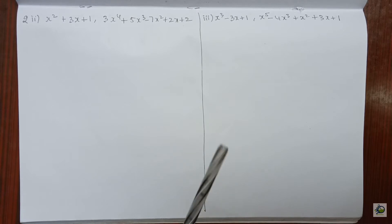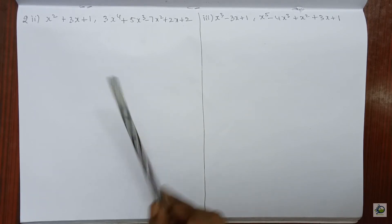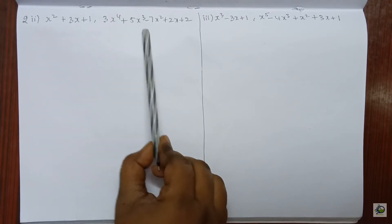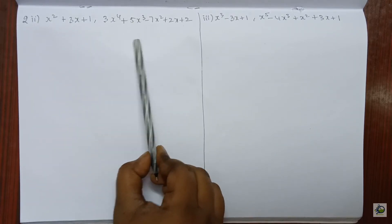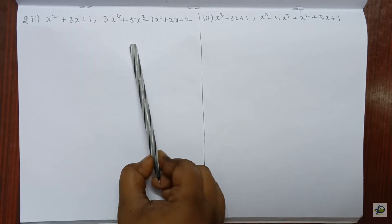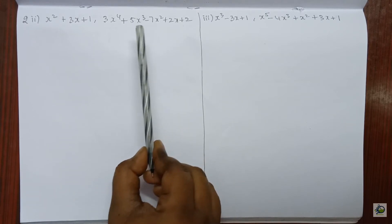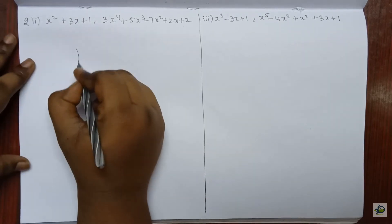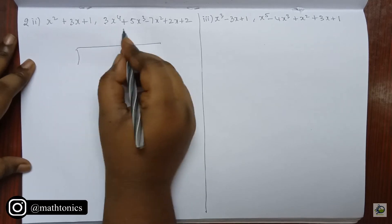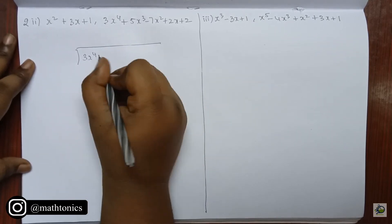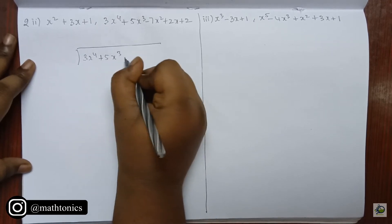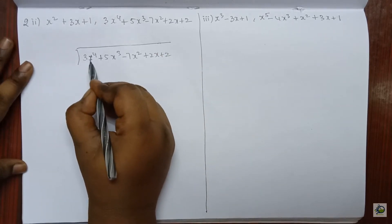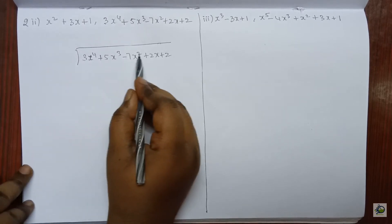Next, we are moving to exercise 2.3 second question, second subdivision. Here we have to divide the second polynomial by the first polynomial to check whether the first polynomial is a factor of this polynomial or not. We can check this by the division method. While dividing, if we get the remainder as 0, then it is a factor; if we don't get 0, then it is not a factor. For the division method, we put the second polynomial inside: 3 x power 4 plus 5 x cube minus 7 x square plus 2x plus 2. We check that the powers of x are in descending order: 4, 3, 2, 1, 0. The divisor is x square plus 3x plus 1.